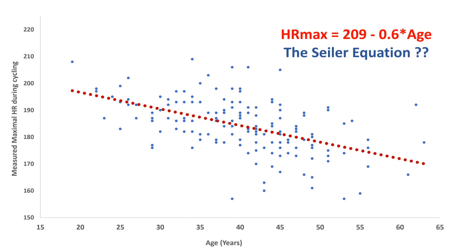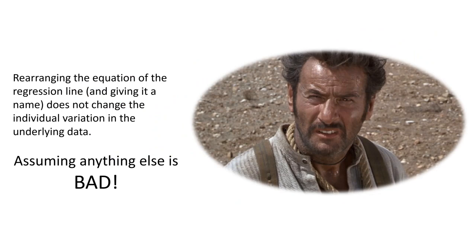Should I publish my Seiler equation — 209 minus 0.6 times age — as the new best way to estimate heart rate max? The answer is no. You're not going to see me publish this or bandy it about as the new best thing, because I know it is just as useful and just as useless as all the other equations. Useful on the population level, but useless at the individual level — or nearly useless — because of that variation. It hasn't gone away.